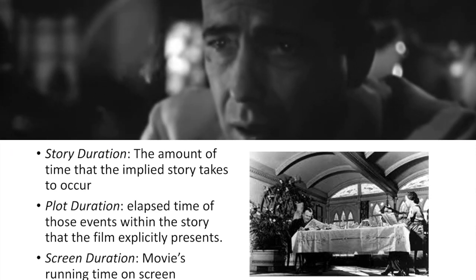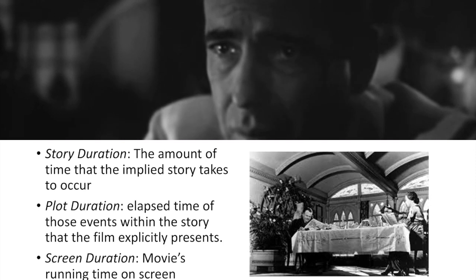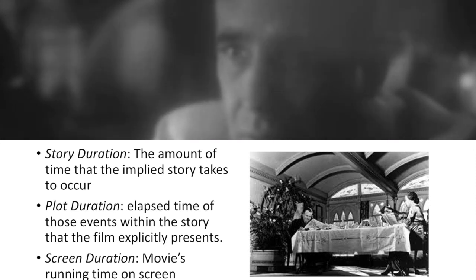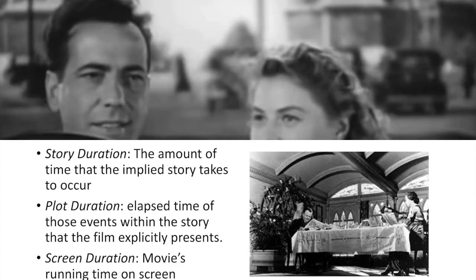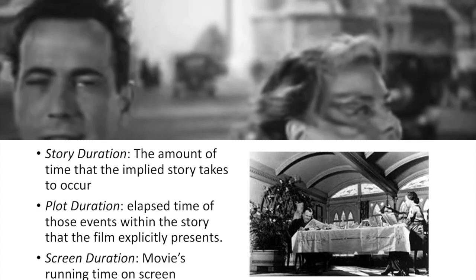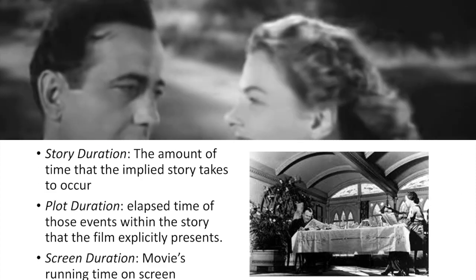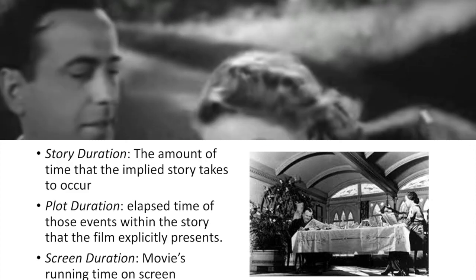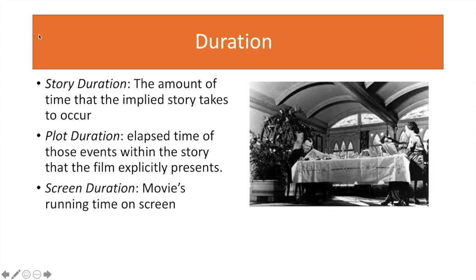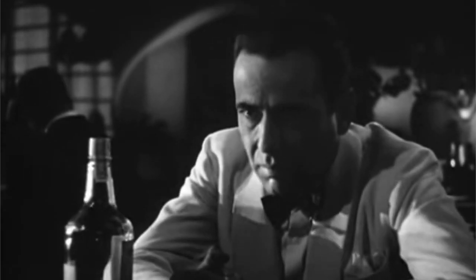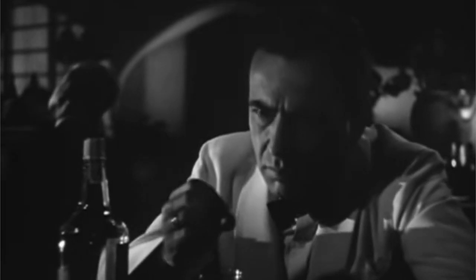In Casablanca, the plot duration is probably a couple of weeks — from when Ingrid Bergman's character arrives in Casablanca through the escape. But the story duration is longer — probably years — because with the Paris flashback inserted, we know the background of Bogart and Bergman's romance. So the story starts from when they were in love in Paris all the way to the end of the film — possibly a couple of years.